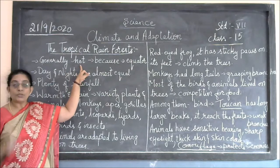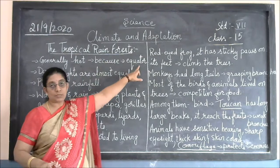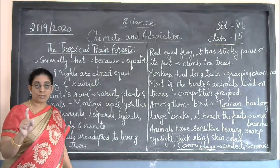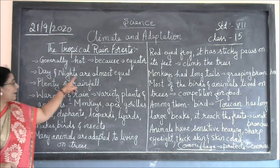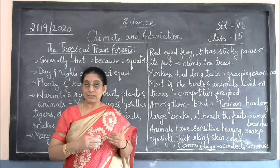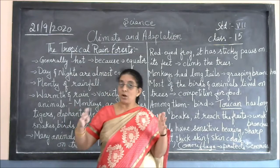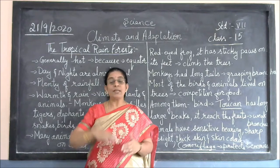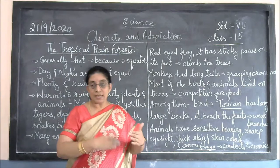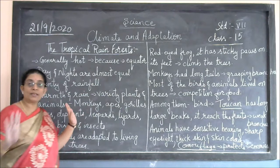Around the equator it is always hot because it is situated close to the sun. Day and night are almost equal here. In the previous session I told you that during summers the days will be long and the nights short, and during winters the days will be short and the nights long. But here in the tropical rainforest, day and night are equal in length.